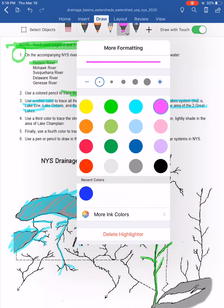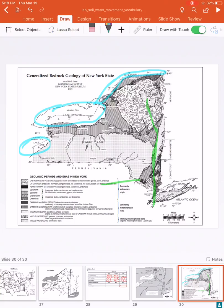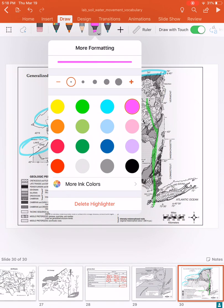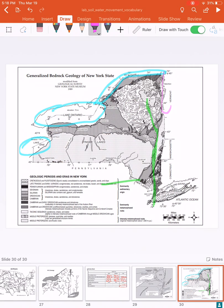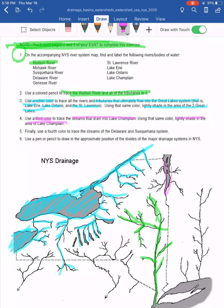For task three, using a third color — pink — trace the streams that drain into Lake Champlain and lightly shade Lake Champlain itself. If you're unsure where Lake Champlain is, use page three of the reference table to locate it. It's right here on the eastern border of the state, with its tributaries spreading out from it.